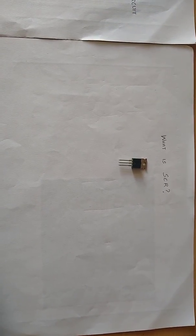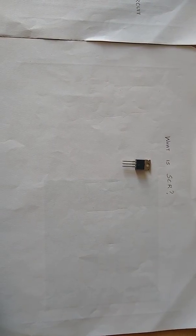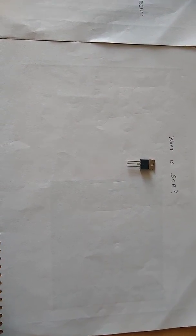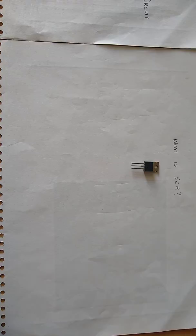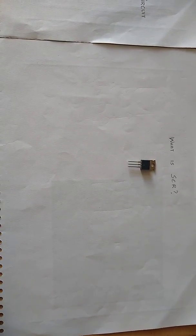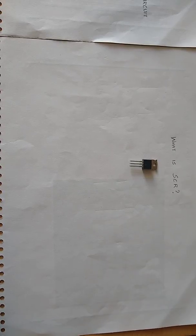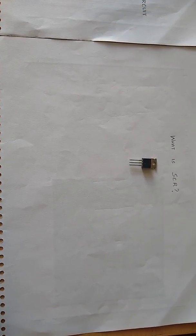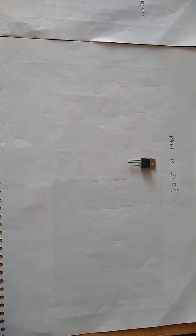SCR is a four layer three junction PNPN semiconductor switching device. It has basically three terminals: anode, cathode and gate. SCR consists of four layers P-type and N-type silicon conductor forming three junctions J1, J2 and J3.